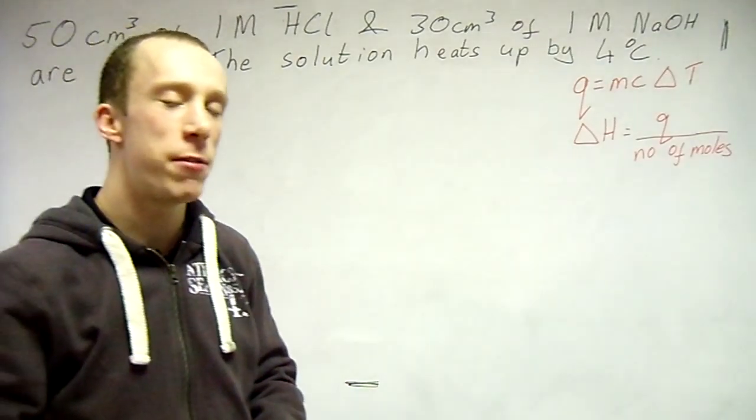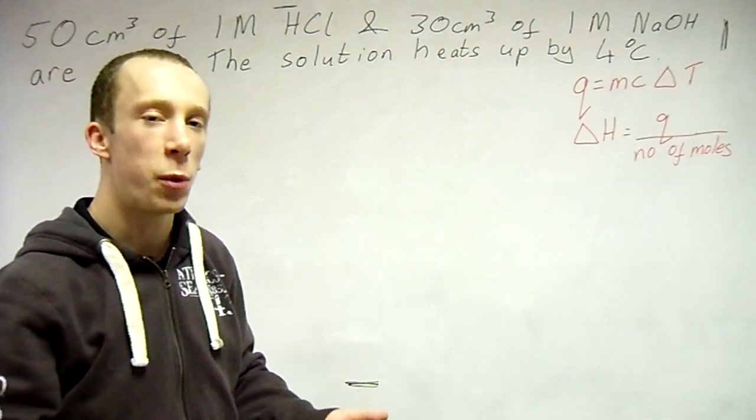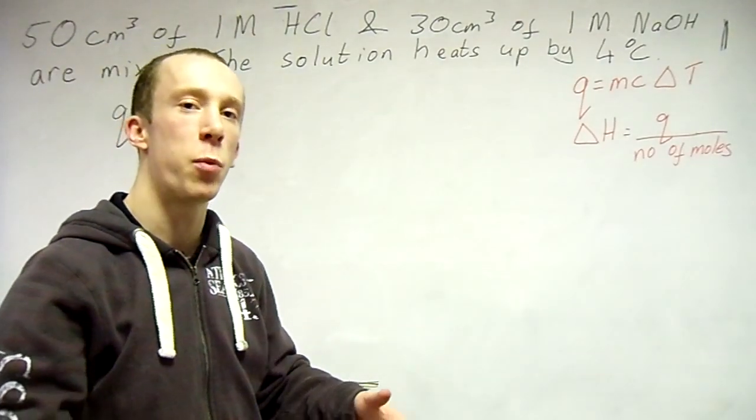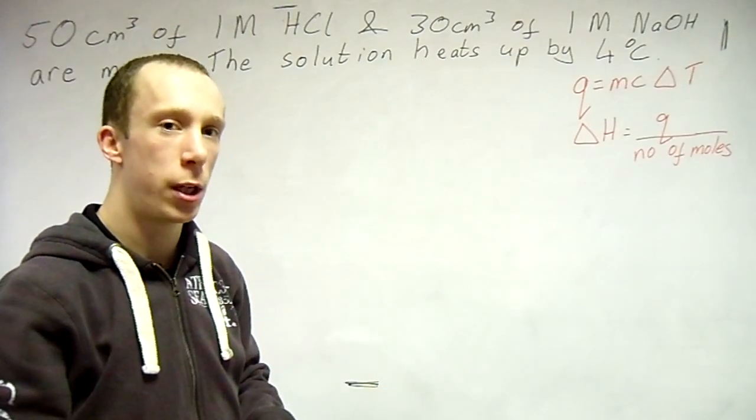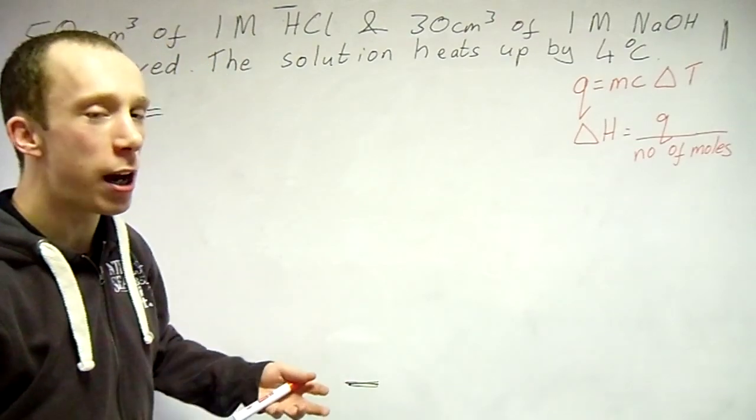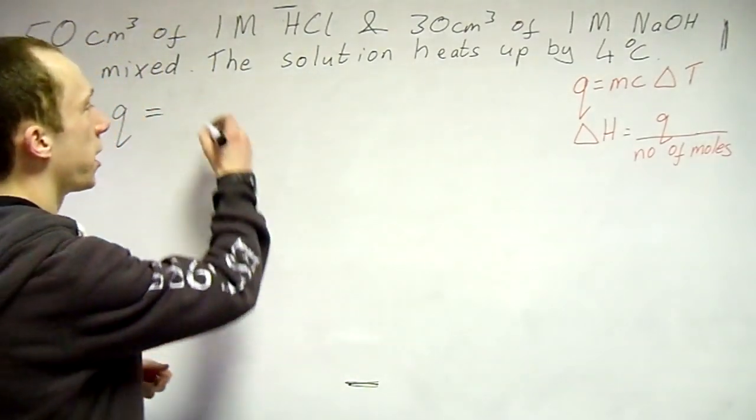Now the mass, the mass of the environment. Is it 50? Is it 30? Do you add them together? Well think about it, the total environment when you've poured them into the cup, are they separate? No, they start to mix together. So your actual mass is the sum of them. So 80 in this case.